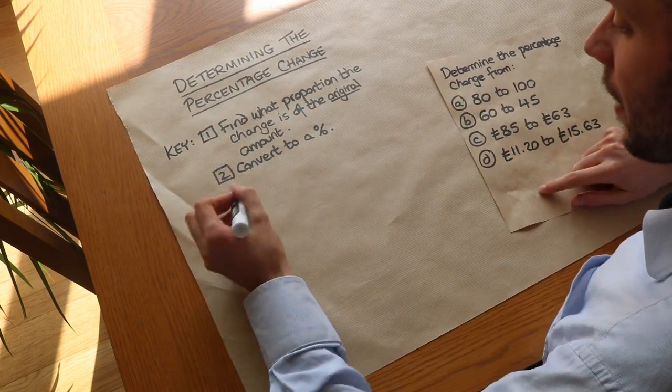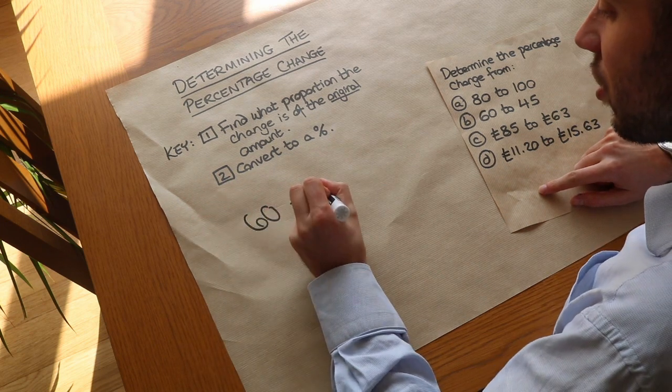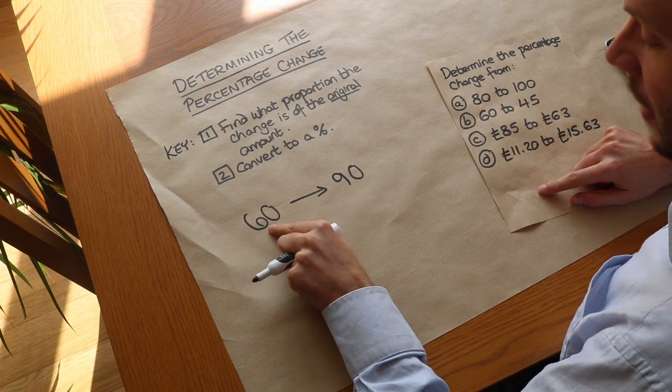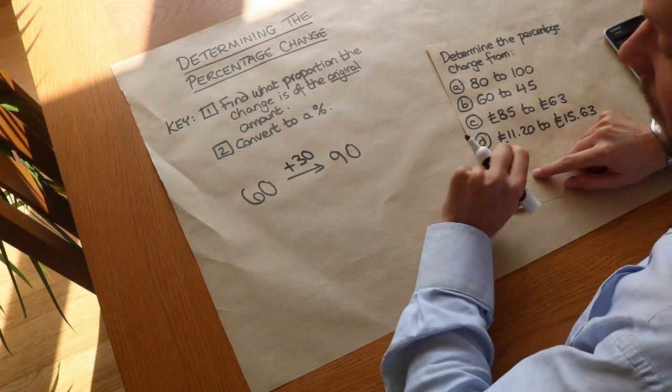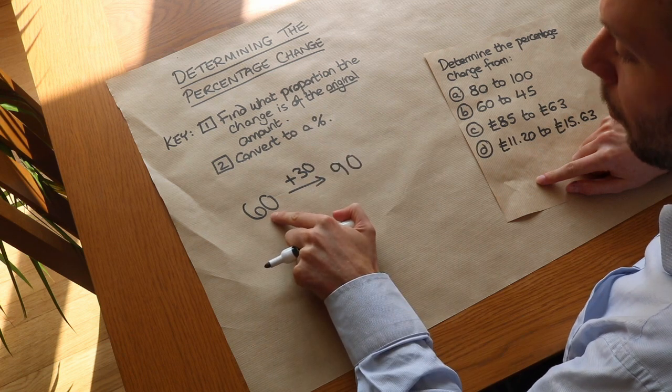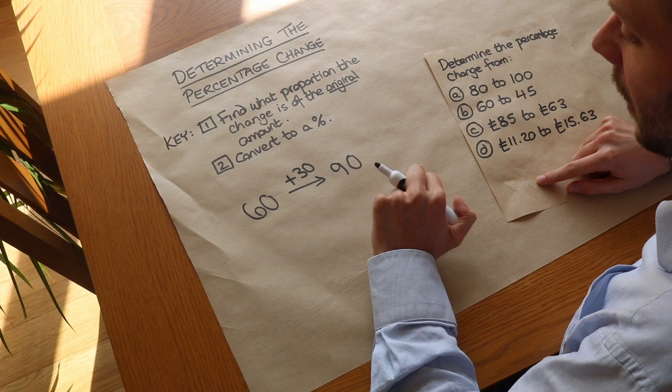Let's say that I had the value of 60 and that changed to 90. Now what was the change? 30. Well, as a proportion of the original amount, 30 is half of the original amount.